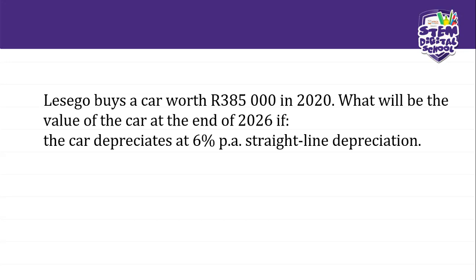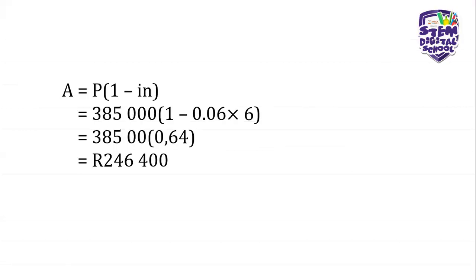Before you answer the question, check what is given and figure out what the question wants you to find. In this case, we want the value of the car, which will be A — our unknown. What is key here is that when we look at depreciation, the value of the car decreases, so money will be subtracted from 385,000. That is why we have the equation A = P(1 − iN). The negative sign simply means we are working with a depreciation.